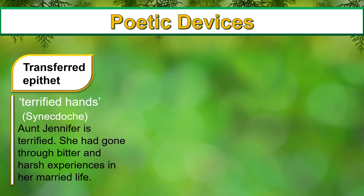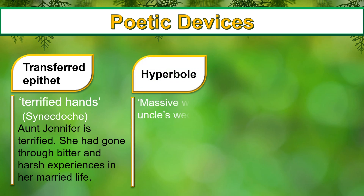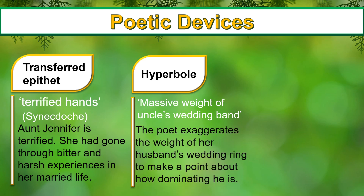Memories of her husband's tortures and atrocities, which bent her into humiliating slavery, will continue to haunt her even after her death. Next we have hyperbole: 'massive weight of uncle's wedding band.' The poet exaggerates the weight of her husband's wedding ring to make a point about how dominating he is. The wedding band appears to weigh her down — she appears bound to social and marital obligations, and the wedding band appears more a restraint than a symbol of love, joy or freedom. This over-the-top description suggests the weight of the ring is more mental than physical.